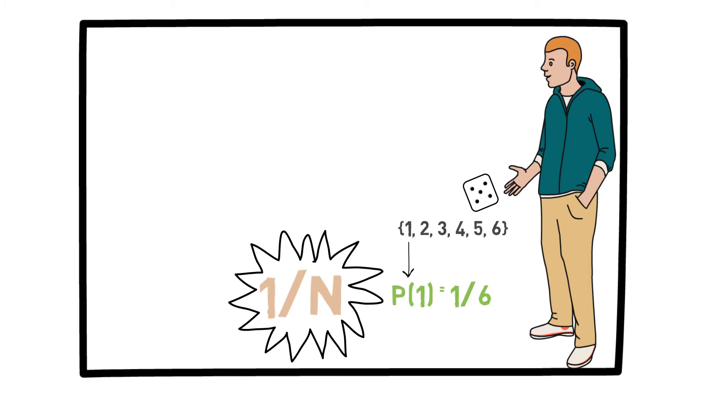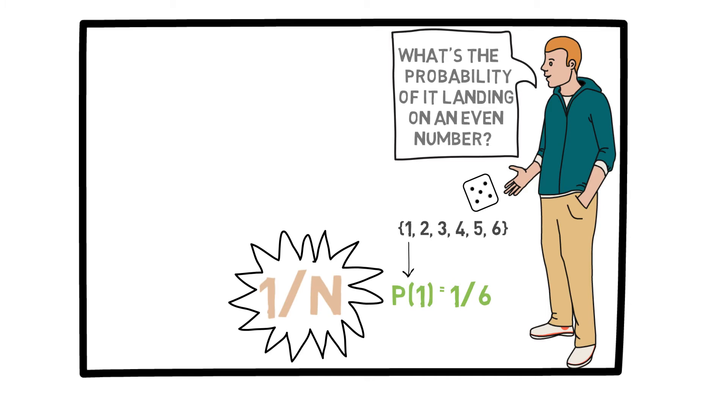For example, let's say I roll a die and I ask you what's the probability of it landing on an even number. Now an even number in this case is 2, 4, or 6. So what is the probability that I observe one of those three numbers? They are equally likely and there are three outcomes here that I am interested in. And the total number of outcomes is 6. So the probability of observing an even number when rolling a die is 3 out of 6, or 1 over 2.